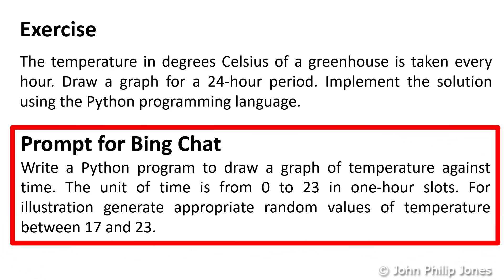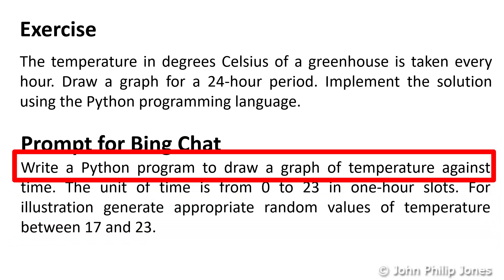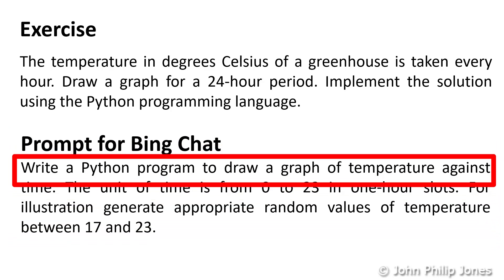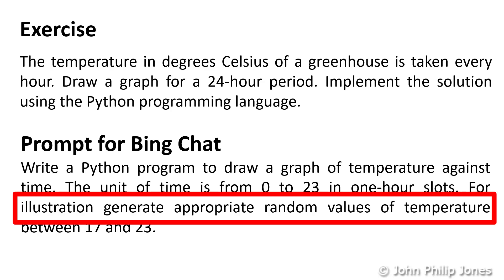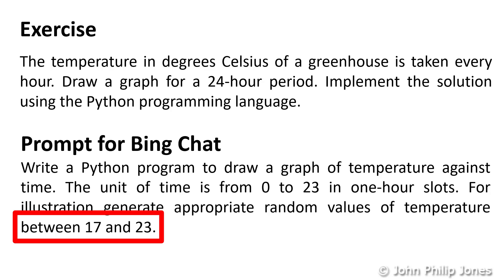It says: Write a Python program to draw a graph of temperature against time. The unit of time is from 0 to 23 in one-hour slots. For illustration, generate appropriate random values of temperature between 17 and 23. So I'm hoping that Bing Chat will realize that I need 24 randomly generated temperature values, and I'm specifying it should be between 17 and 23, which are some typical temperatures you might find in a greenhouse.